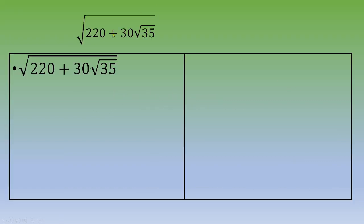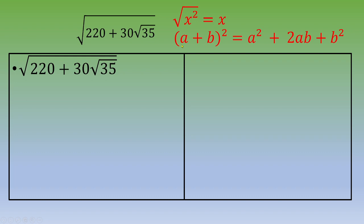First, when you deal with a square root, it is always nice if below the root you have a perfect square. For example, the square root of x squared is x. Because we have a plus between these two quantities, we are going to try to transform them into a perfect square using the remarkable identity: (a + b)² = a² + 2ab + b².